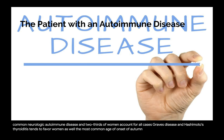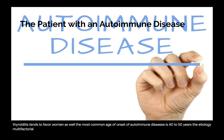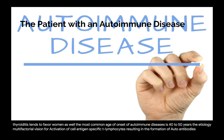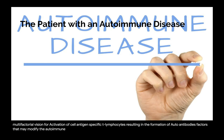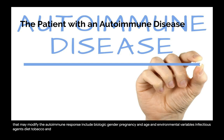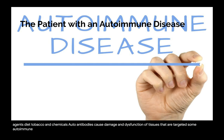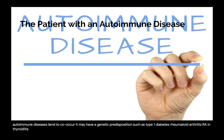The most common age of onset of autoimmune diseases is 40 to 50 years. The etiology is multifactorial, including genetic predisposition for activation of antigen-specific T lymphocytes resulting in autoantibody formation. Factors that may modify the autoimmune response include biological gender, pregnancy, age, environmental variables, infectious agents, diet, tobacco, and chemicals. Some autoimmune diseases co-occur due to genetic predisposition, such as type 1 diabetes, rheumatoid arthritis, and thyroiditis. Connective tissue autoimmune diseases have higher comorbidity.